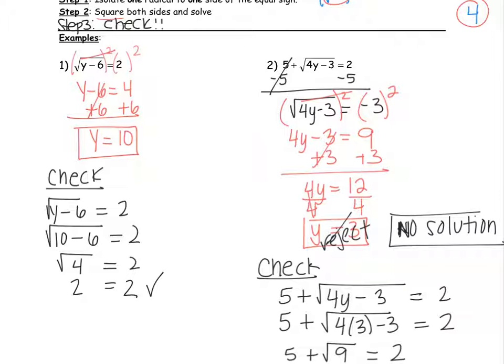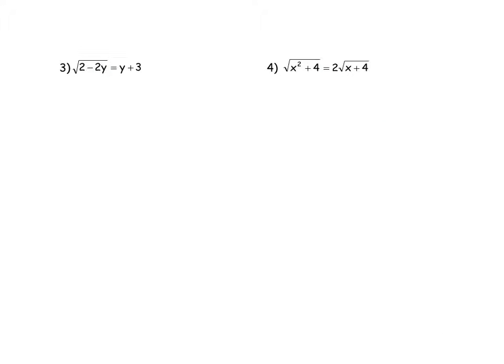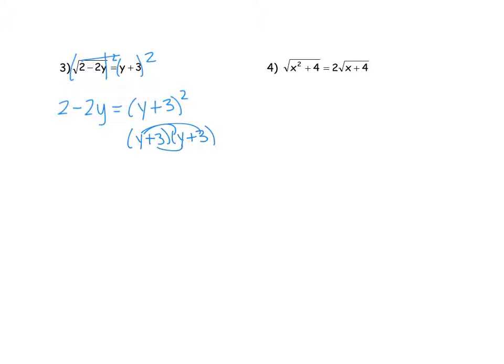Let's move on to the next example. In example number 3, the radical is definitely isolated, and we are going to straight square both sides. The square and the square root will cancel each other out here, so we're left with 2 minus 2y equals y plus 3 squared. Now this y plus 3 squared is the same thing as writing y plus 3 times y plus 3, so don't forget we have to double distribute.